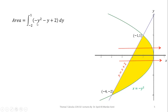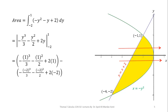Integrating -y² - y + 2 with respect to y: the integral of y² is y³/3, the integral of y is y²/2, and the integral of 2 is 2y. Applying the Fundamental Theorem — upper limit minus lower limit — substituting y = 1 for the upper limit and y = -2 for the lower limit, and after simplification, we get the result: 9/2.